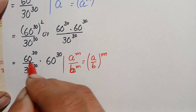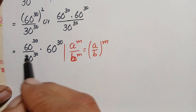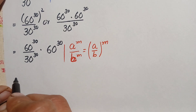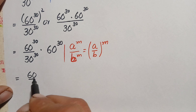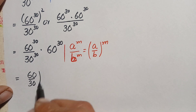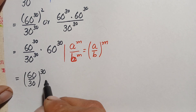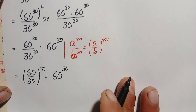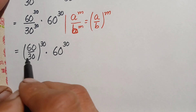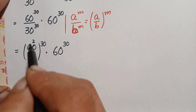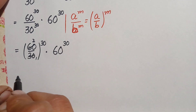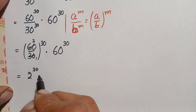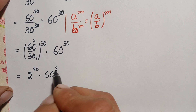Using this identity, we take out the power common and divide the bases. This gives us 60 divided by 30, raised to power 30, times 60 raised to power 30. Simplifying: 60 divided by 30 is 2, so this becomes 2 raised to power 30 times 60 raised to power 30.